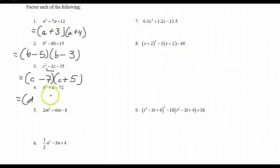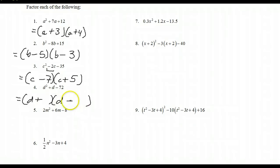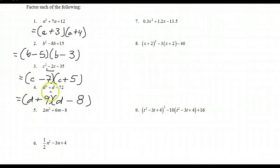For the next one, we have a d plus and a d minus because the last term is negative. The factors multiply to 72. Because of the minus sign they differ by 1, and the larger is positive — so the numbers are 8 and 9, with positive 9. Check: d squared minus 8d plus 9d gives plus 1d minus 72.